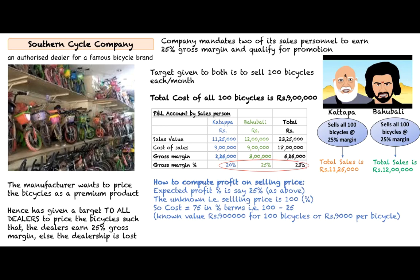When computing profit on selling price: the expected profit is 25% as above. The unknown is always 100% — and in this case, the unknown is the selling price. Therefore, 100 minus 25 equals 75%, which represents the cost. The known value is rupees 9 lakh for 100 bicycles, or rupees 9,000 per bicycle.